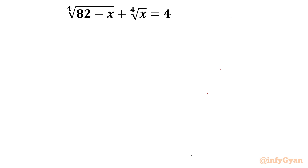Hello everyone. Welcome to Infigyan. In this exciting video of algebraic challenging equations, we are going to solve one very interesting equation: 4th root of (82 minus x) plus 4th root of x equals 4. This question is from the Mathematical Olympiad.